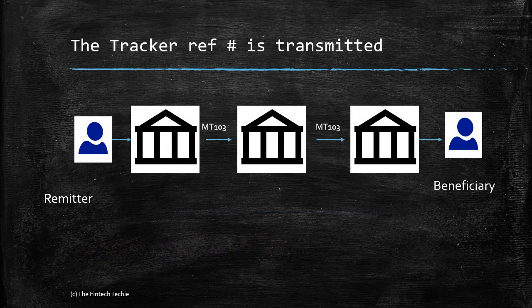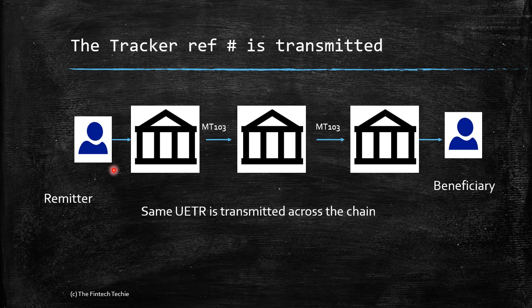Before we go into the nuances of stop and recall, let's do a short recap on Swift GPI. A Swift GPI message is a normal payment message, but what's unique about it is the UETR number — the unique end-to-end transaction reference number — which is tagged to the MT103.